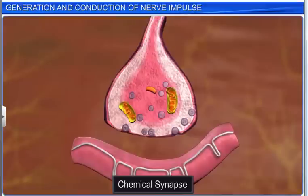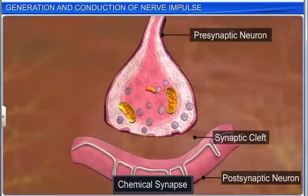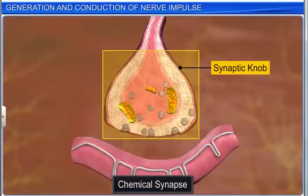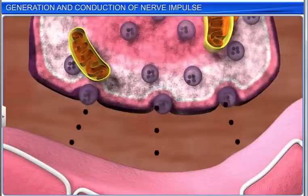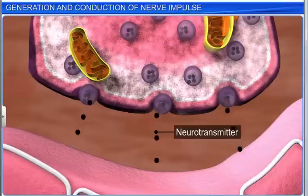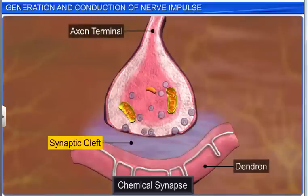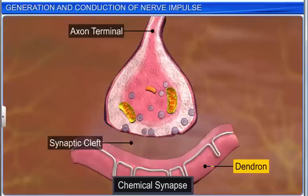Chemical synapses are common in the human system and consist of a pre-synaptic neuron, synaptic cleft, and a post-synaptic neuron. A pre-synaptic neuron ends with a synaptic knob, which has a large number of mitochondria and many synaptic vesicles. Each synaptic vesicle contains neurotransmitter chemical molecules such as acetylcholine. The synaptic cleft is a fluid-filled gap between the axon terminal and the dendron of another neuron, so there is no protoplasmic continuity between neurons.